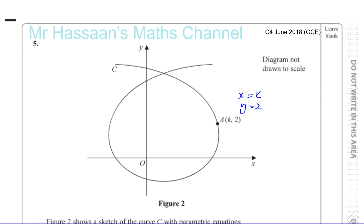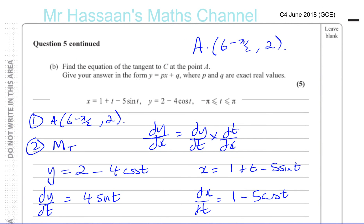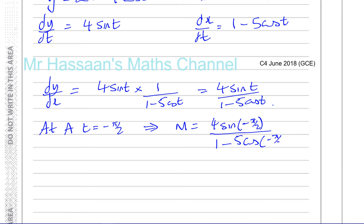At point A, t equals minus pi over two. The gradient at A is therefore four times sine of minus pi over two, divided by one minus five times cosine of minus pi over two. Sine of minus pi over two equals minus one, giving four times minus one equals minus four in the numerator. Cosine of minus pi over two equals zero, so the denominator is one minus zero equals one. The gradient is minus four.